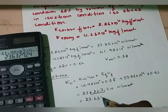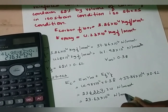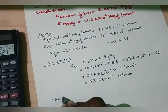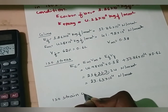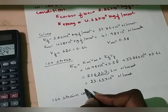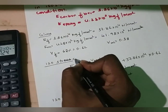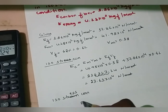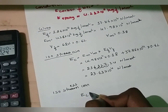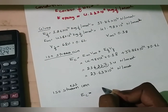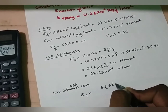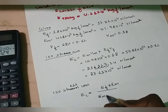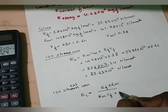This is the result at isostrain condition. Now let us calculate at isostress condition. The formula for Ec is: Ec = (Ef × Em) / (Em × Vf + Vm × Ef).